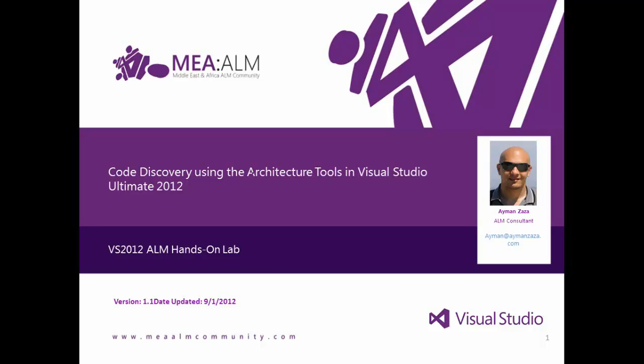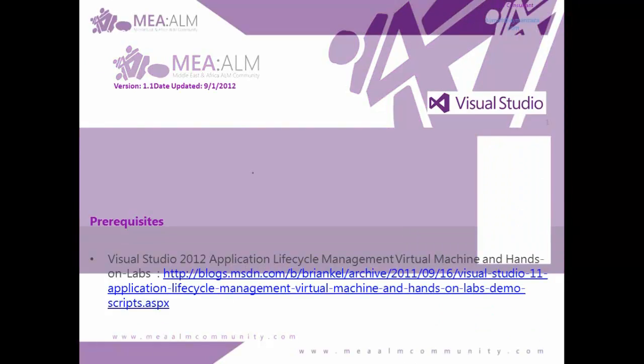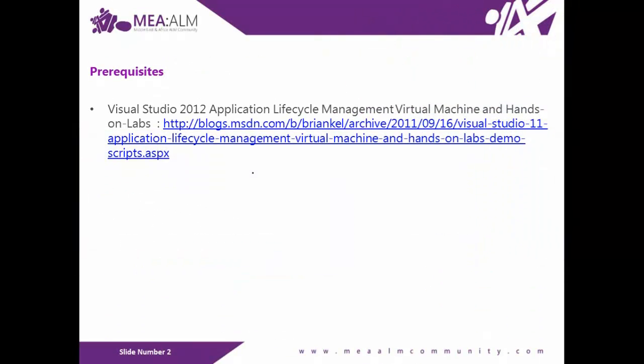In this lab, you will learn to generate and navigate dependency graphs with Visual Studio Ultimate 2012 in order to get a better understanding and communicate with system architecture. In order to complete this lab, you will need the Visual Studio 2012 virtual machine provided by Microsoft. You can download it from the provided link.